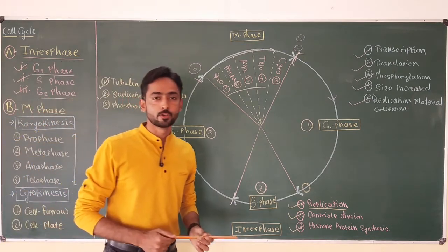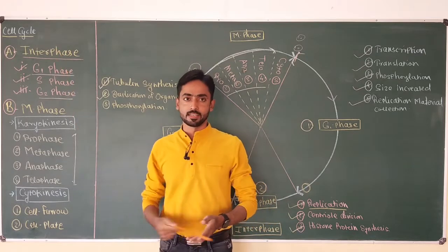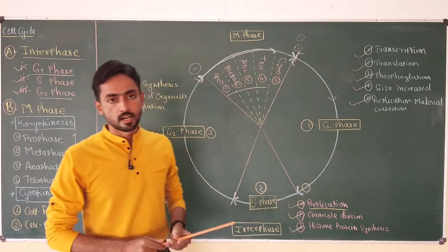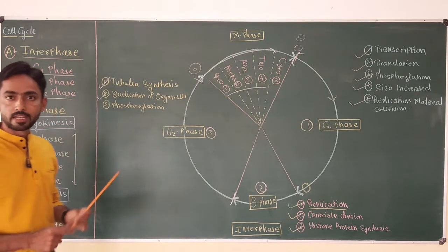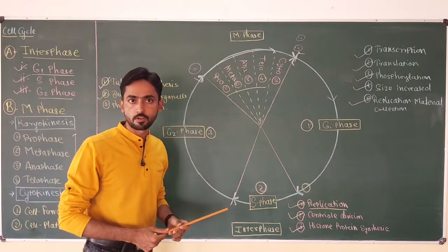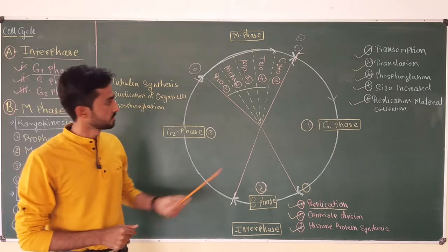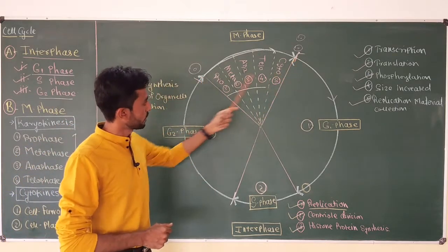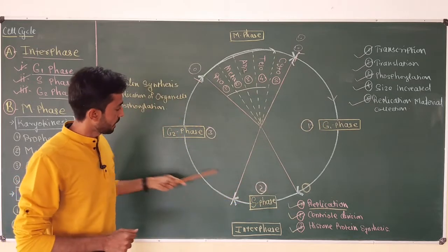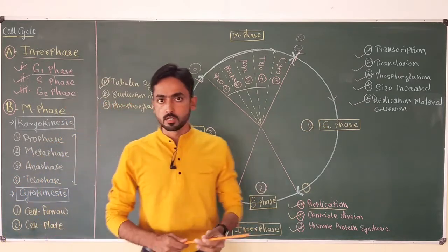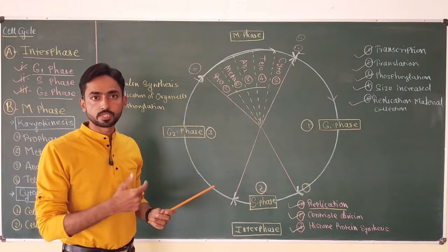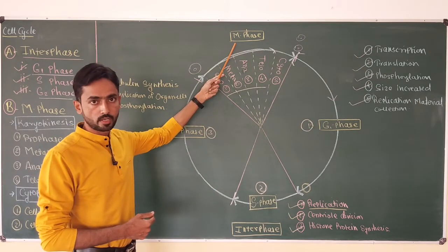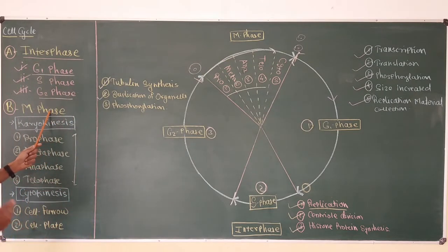Hello friends. We have started a new video series on the topic cell cycle. In my last three videos, I discussed in detail about the three important phases of the interphase: G1 phase, S phase, and G2 phase. This is the cell cycle of a typical eukaryotic cell which has two important phases. The M phase is divided into two sub-phases: karyokinesis and cytokinesis.